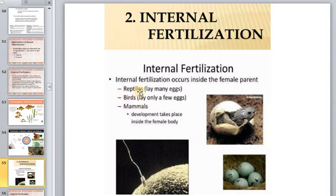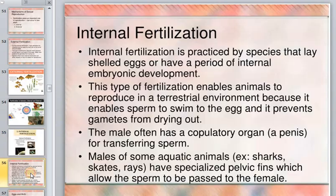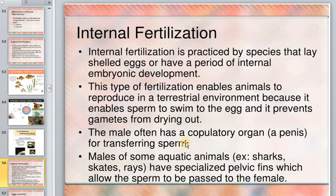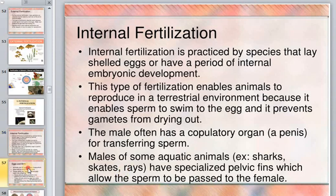Internal fertilization is practiced by species that lay shelled eggs or have a period of internal embryonic development — pregnancy. This type of fertilization enables animals to reproduce in terrestrial environments because it prevents gametes from drying out. The male often has a copulatory organ. Males of some aquatic animals such as sharks and rays have special pelvic fins which allow sperm to be passed to the female.